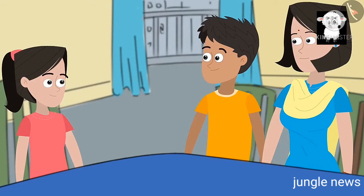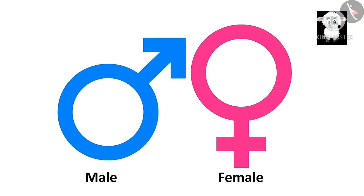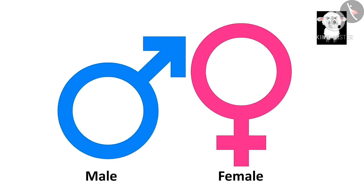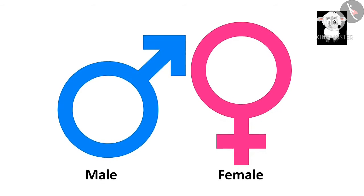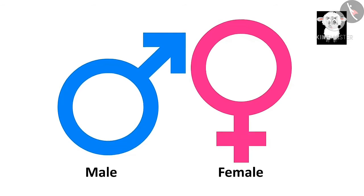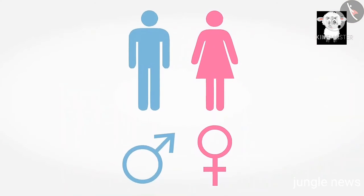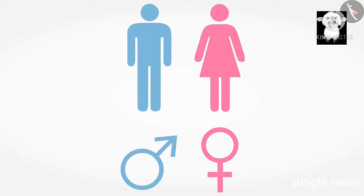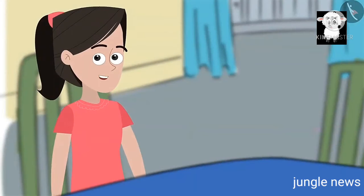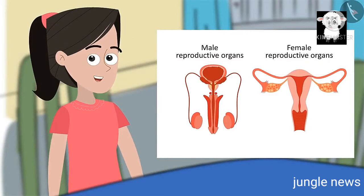Yes, Sanya, they do. But unlike in plants, both male and female parts or organs are not present on the same animal. Some animals have male organs and are referred to as male animals, while others have female organs and are referred to as female animals — like in humans, right? That's right. Friends, can you refer to the image and list out the male and female reproductive organs in humans?